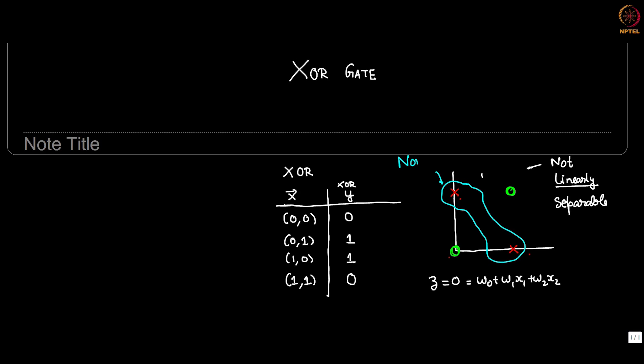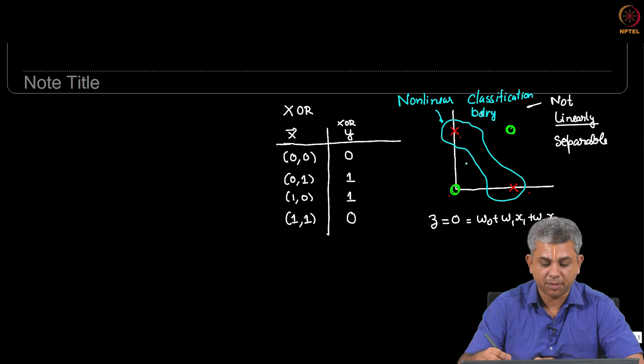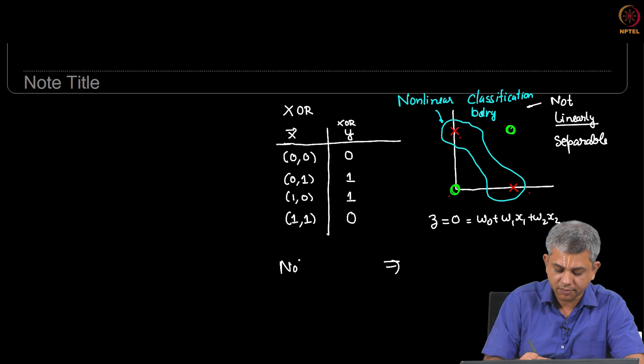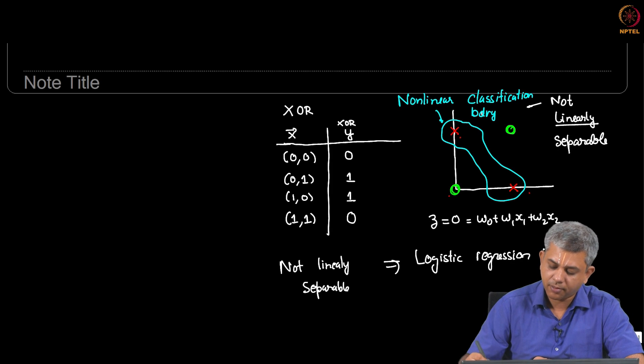But linearly these two classes cannot be separated. So this is fundamentally the problem, which means since this is not linearly separable you cannot use logistic regression in order to separate these two classes.